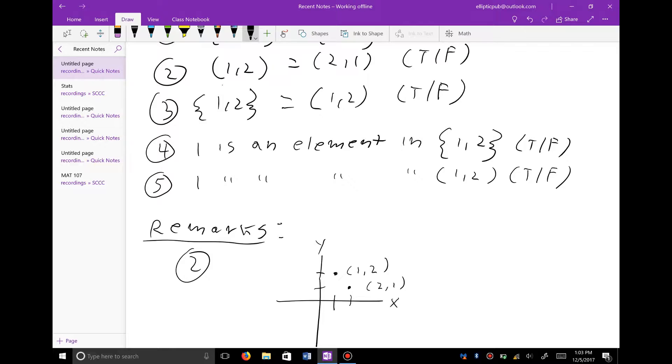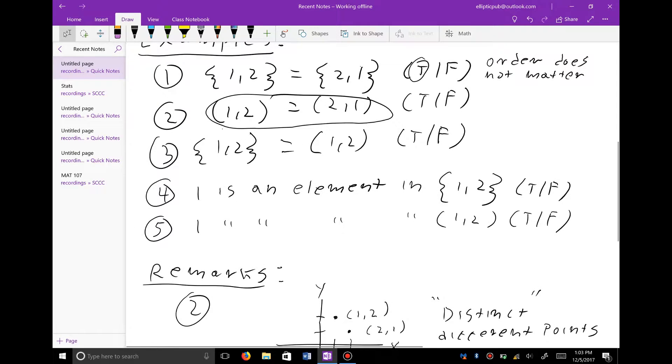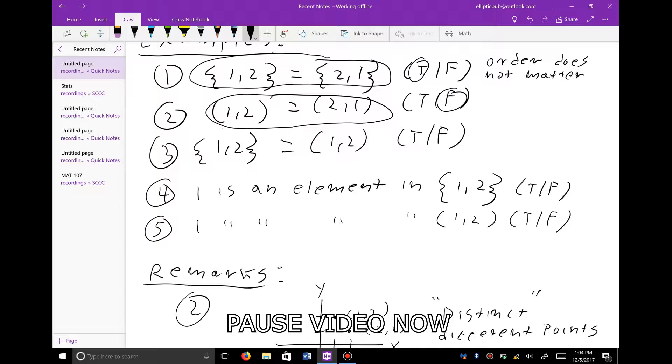Notice these are distinct points. The word distinct means different. So because of that, we see that these two ordered pairs are different. They are not equal to each other, while these two sets are equal to each other. I want to be very clear about that. So pause this video for a minute if you want to reflect on the fact that for ordered pairs, order does matter, but for sets, order does not matter.